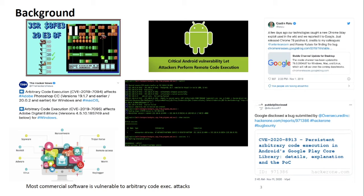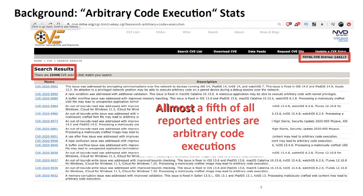First of all, software vulnerabilities. We know all software contains vulnerabilities, and some of these vulnerabilities can be exploited and code reuse attacks can be performed. For this reason, it's important to study this topic and to come up with solutions which mitigate these exploits. The Common Vulnerability and Exposure database contains almost one fifth of all entries as arbitrary code execution exploits, which is why we need to provide protection techniques for this type of attack.